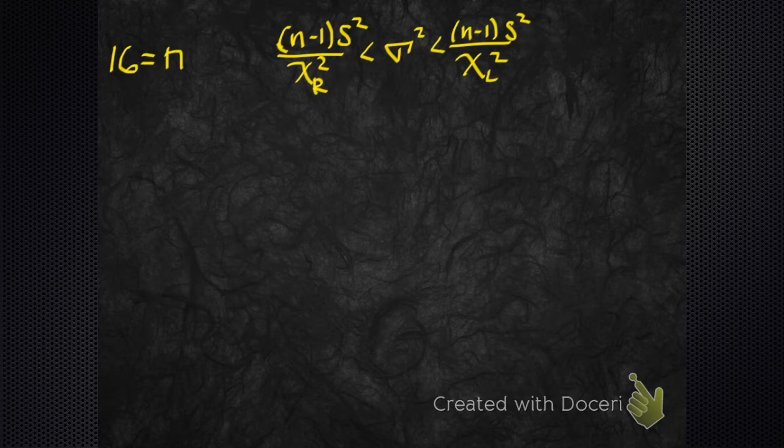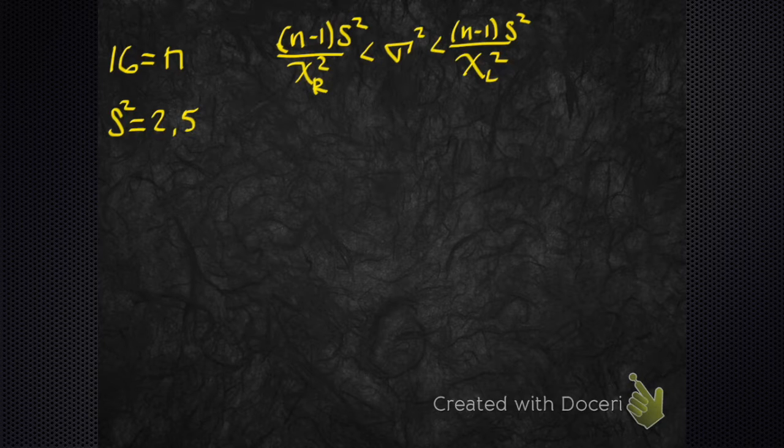So we took a sample and what was our sample variance? Just make something up. 2.5. Our sample variance was s squared equals 2.5.